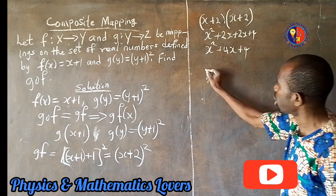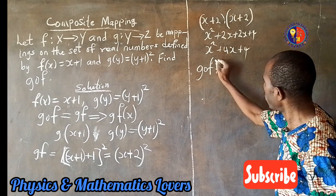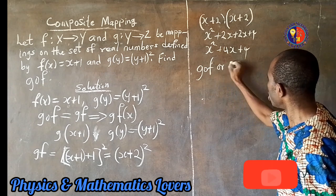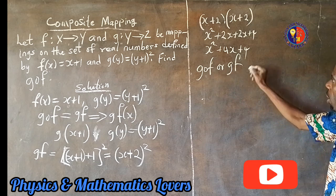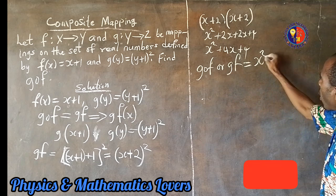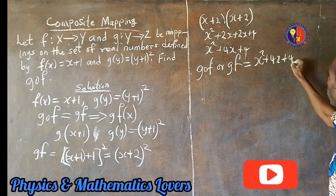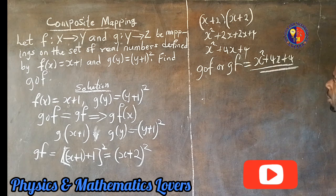So our answer now, our g∘f, or gf, as the case may be. See that, you put it this way, or you put it this way. It's equal to x squared plus 4x plus 4. This is our final answer.